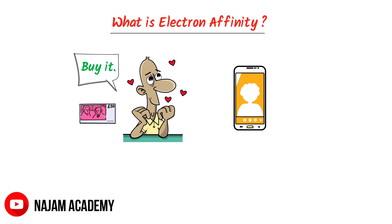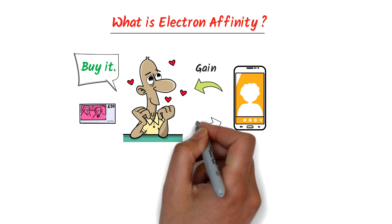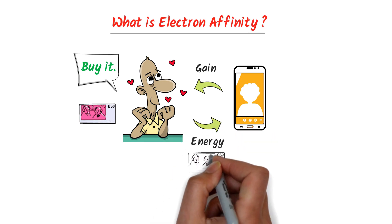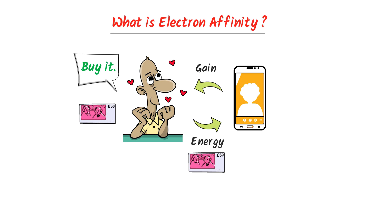We say that Mr. Tom loves this cell phone. He gained this cell phone after losing energy in the form of money. Thus we learn that if Mr. Tom gains this cell phone, he has to lose energy. Remember that the word affinity means love.